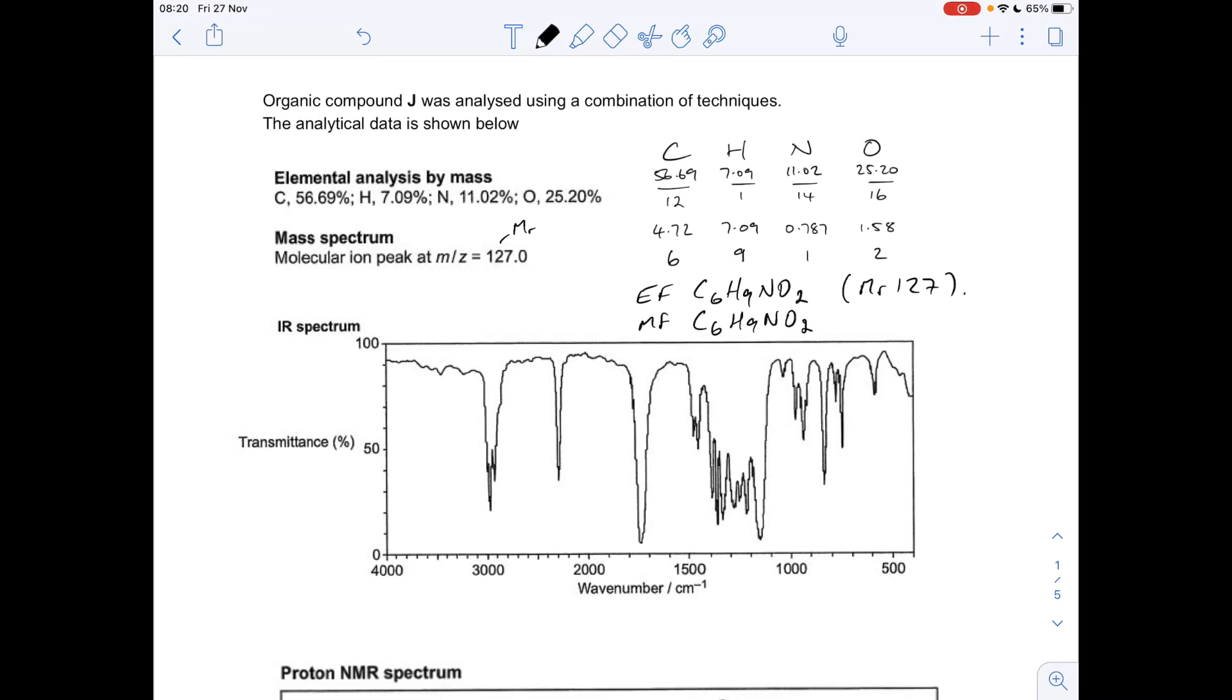Moving on to the infrared spectrum, this will show us the functional groups in the molecule. The first place I always look is around the 3000 mark. Something very broad between about 2.5 and 3.3 thousand would indicate COOH. We haven't got that, so no COOH.